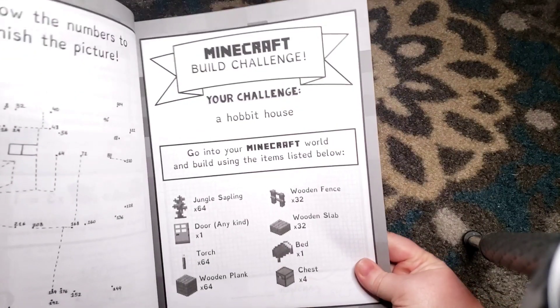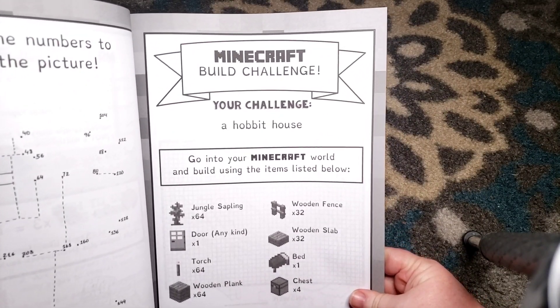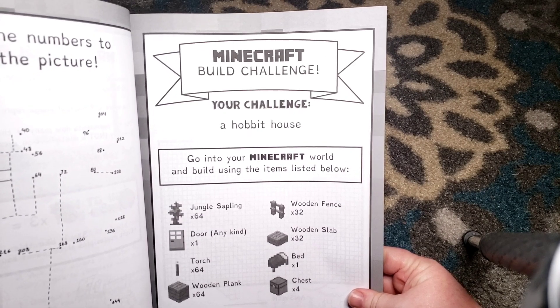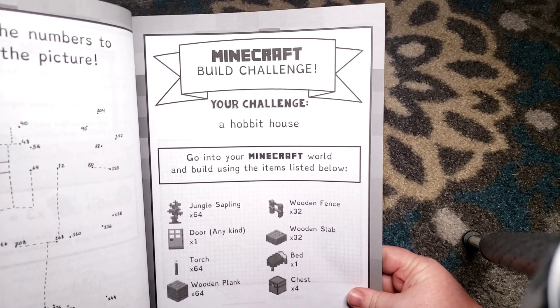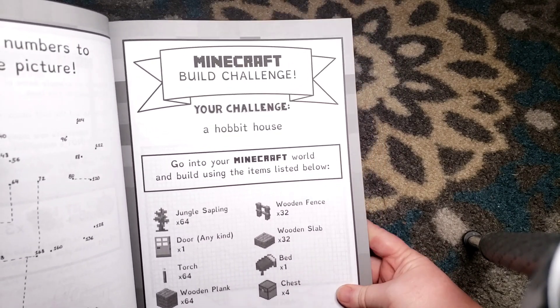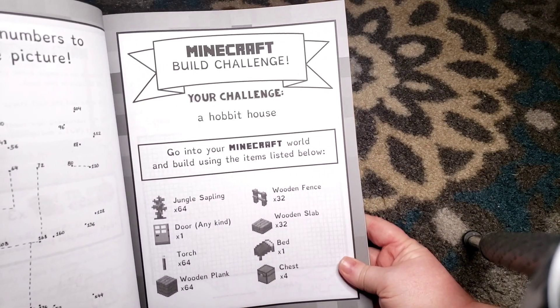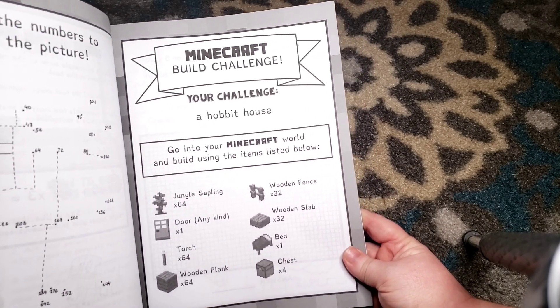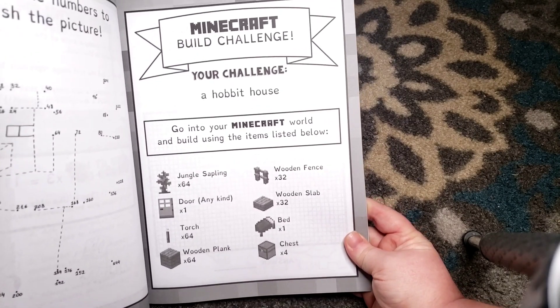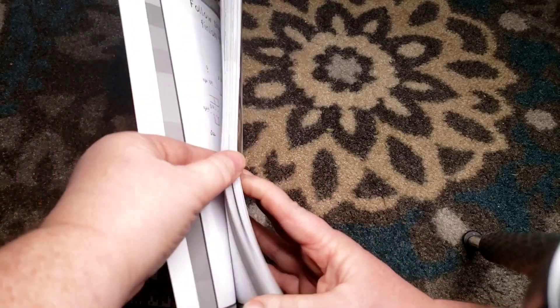Right here, a Minecraft build challenge. When my kids saw this they got really excited because any opportunity that they can have to do Minecraft for school they are going to jump at it. This is your challenge: a hobbit house. Go into your Minecraft world and build using the items listed below: jungle sapling times 64, a door any kind times one, torch, wooden plank, wooden fence, wooden slab, bed, and chest. So it tells them all the materials that they have to use to build things.